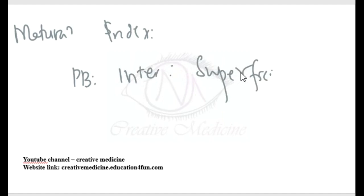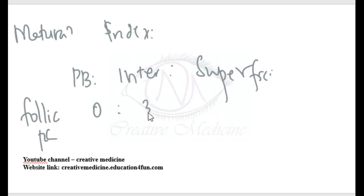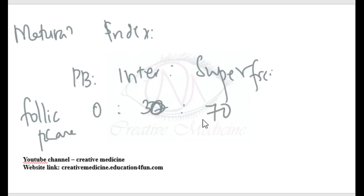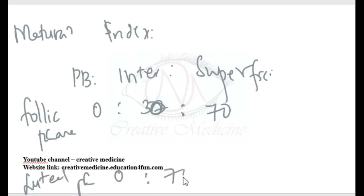In the follicular phase, parabasal cells are 0, intermediate cells are 30, and superficial cells are 70. In the luteal phase, parabasal cells are 0, intermediate cells are 70, and superficial cells are 30.